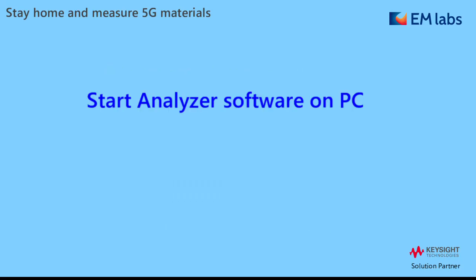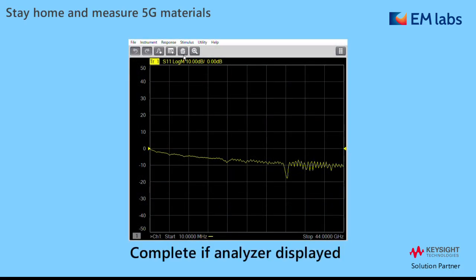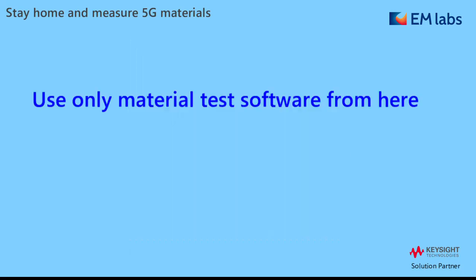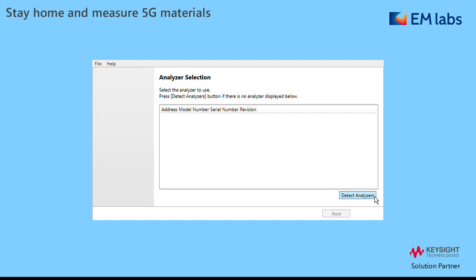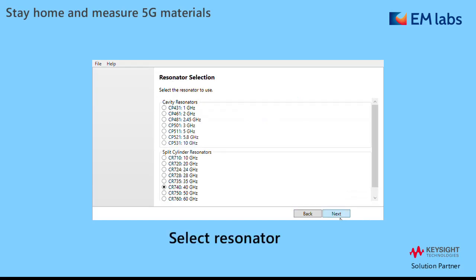Move on to software. Start the Analyzer on PC — it's a normal Windows application. Just start and follow the instructions and you'll see the analyzer display like this. From here we only use the material test software. Start the software, connect the analyzer for control, and select the resonator. There are options from 10 to 80 GHz, and we use the 40 GHz for 5G today.